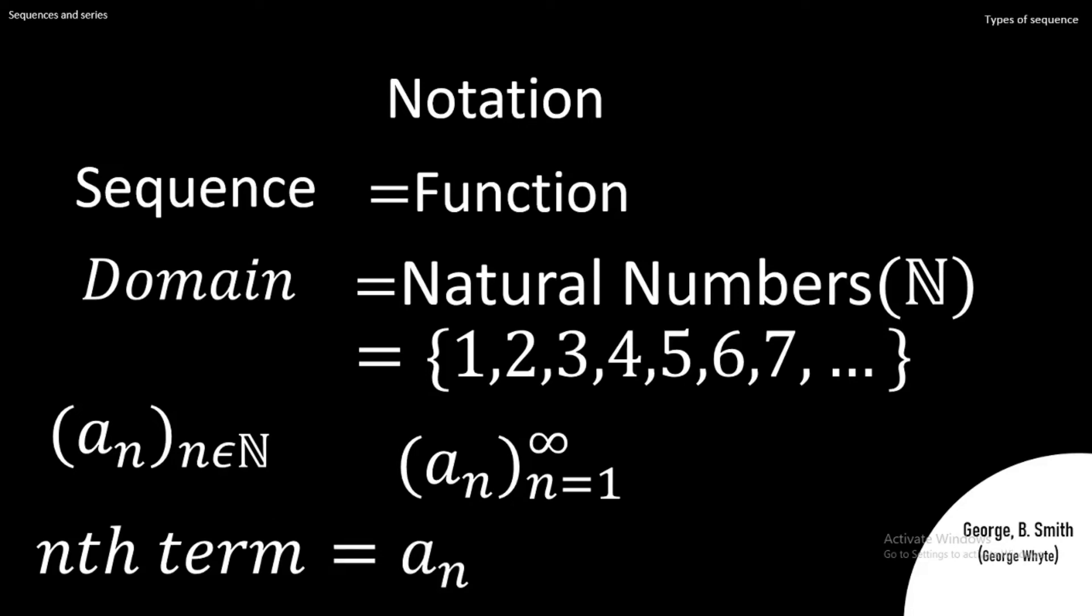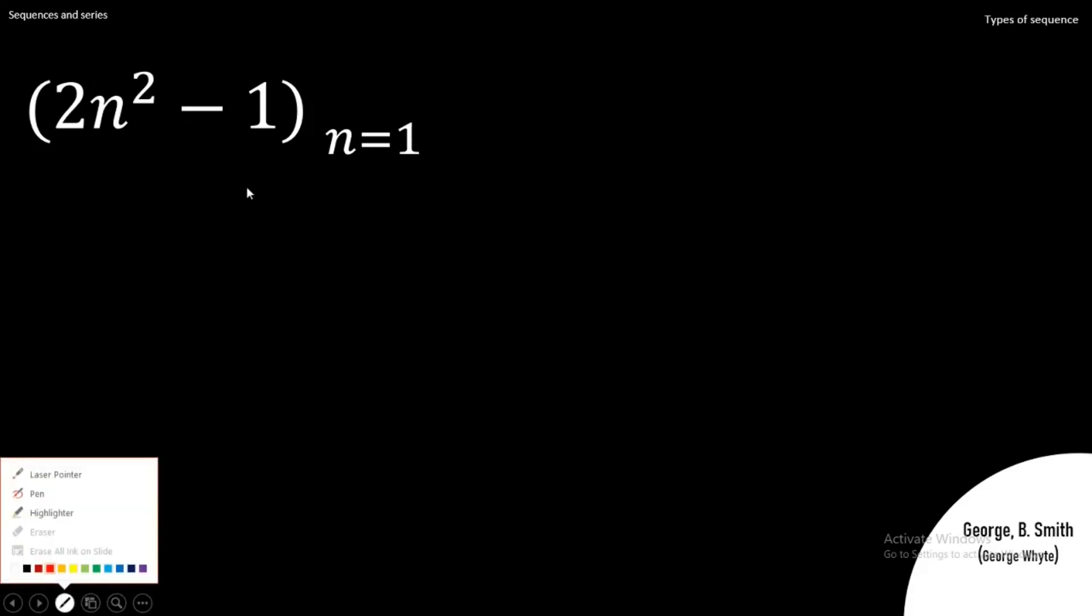So let's look at an example. For example, we have 2n² - 1, where n starts from one. There is meant to be infinity here, or I would have said n is an element of natural numbers. So take note: n starts from one down to infinity. That's what I meant here—that's a mistake, so I can just put that here.